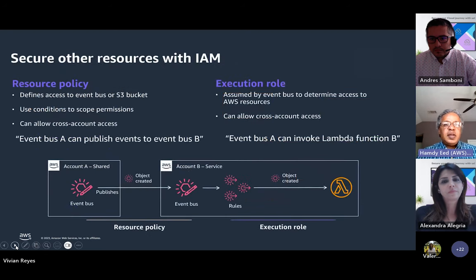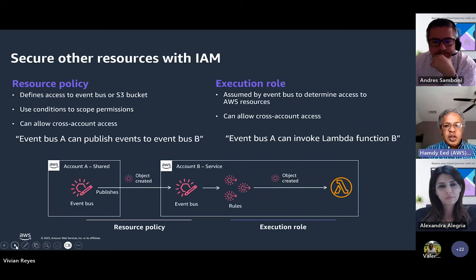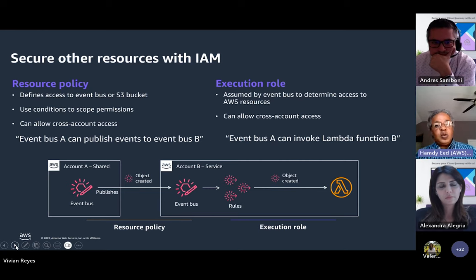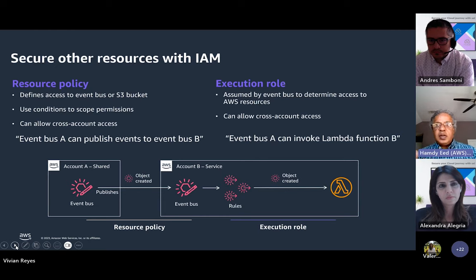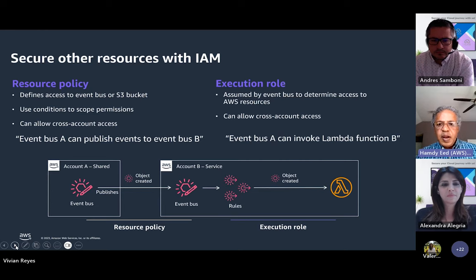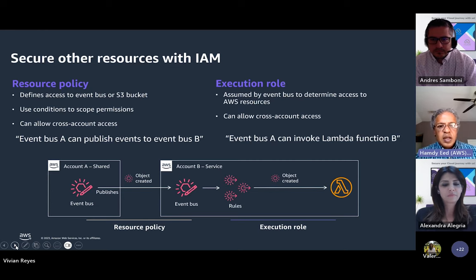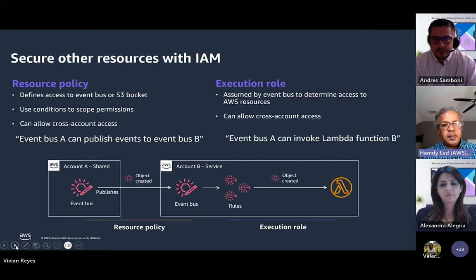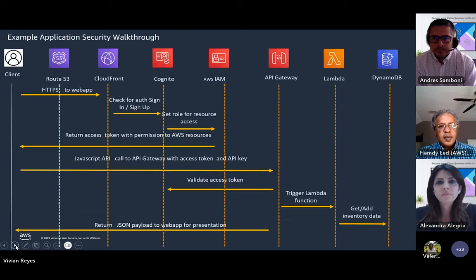It's important to distinguish between resource policies and execution roles. A resource policy defines what can be done with the resource itself. An execution role defines what the service can access or talk to — for example, a Lambda execution role defines what the function can do with a backend database. You can have a resource policy or execution role on an event bus in Account A that allows it to invoke a Lambda function in Account B across accounts.